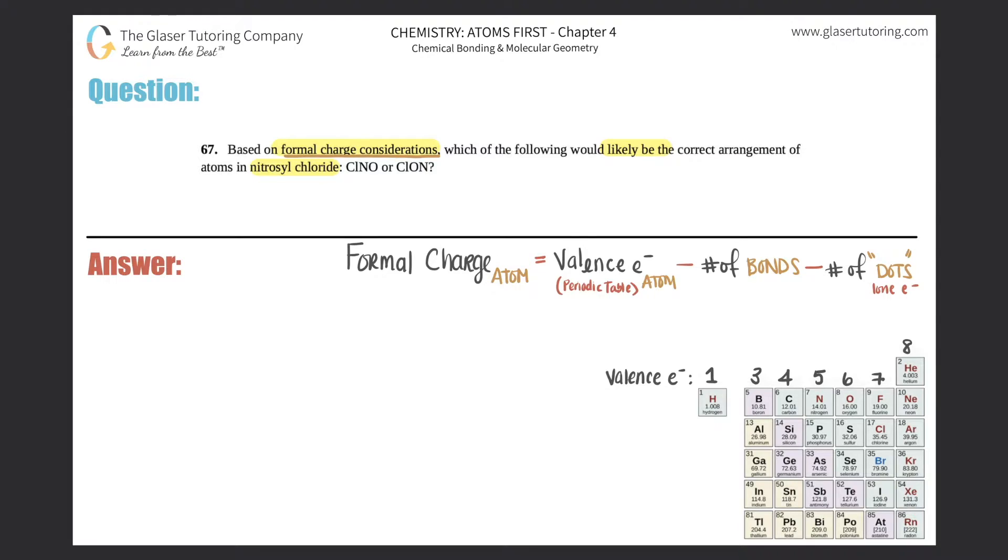Remember, the first thing is that you've got to figure out which is the central atom. Now, for these, they wrote it out from left to right. So ClNO versus ClON. So in this case, the nitrogen would be the central atom as opposed to the oxygen.